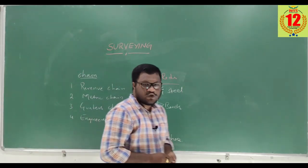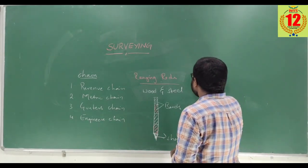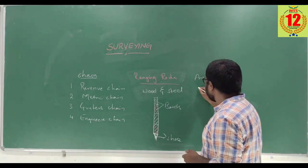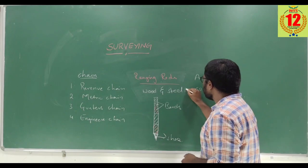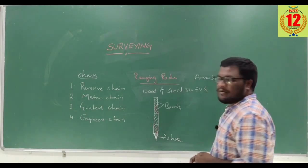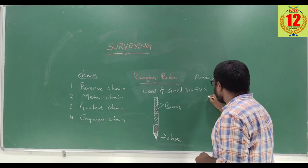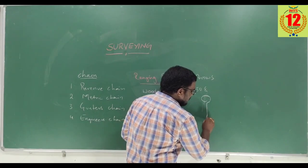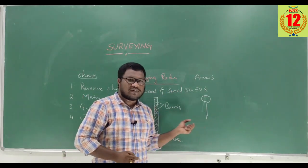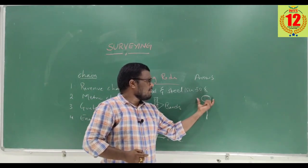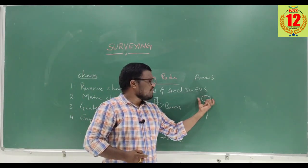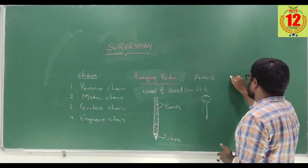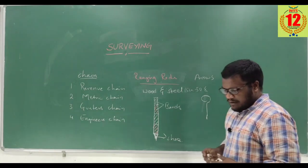Another instrument used for chain surveying is the arrow. Arrows are 15 centimeters to 50 centimeters in length and are in the shape of a question mark — the bottom part is sharp. They are used for fixing intermediate stations. The upper part is called the head and is used for holding. Arrows are made up of mild steel.